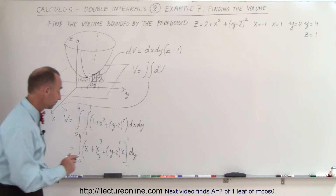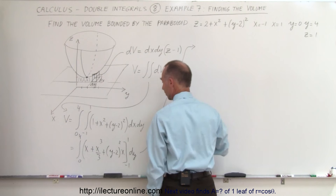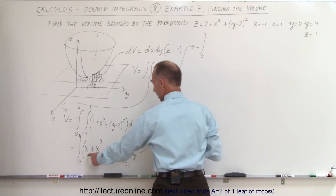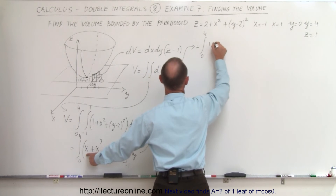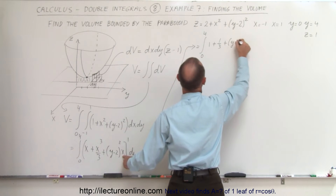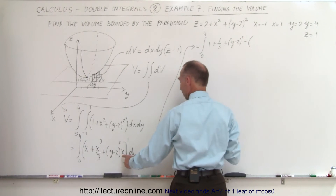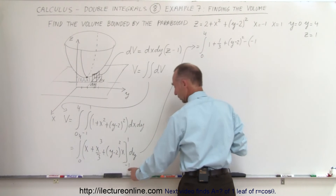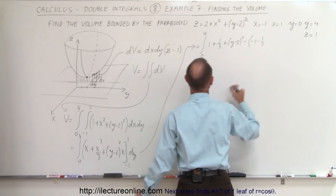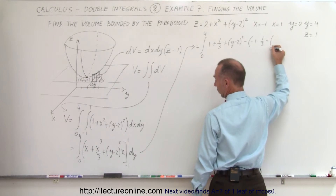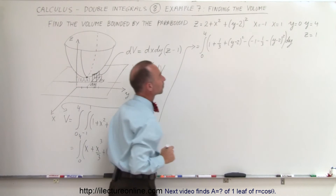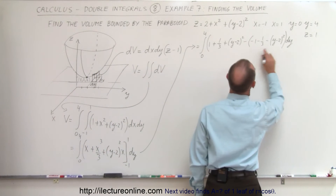Plugging in the limits: for the upper limit x equals 1, we get 1 plus 1 third plus the quantity y minus 2 squared. Subtracting the lower limit x equals minus 1, we get minus 1 minus minus 1 third minus the quantity y minus 2 squared, all times dy.